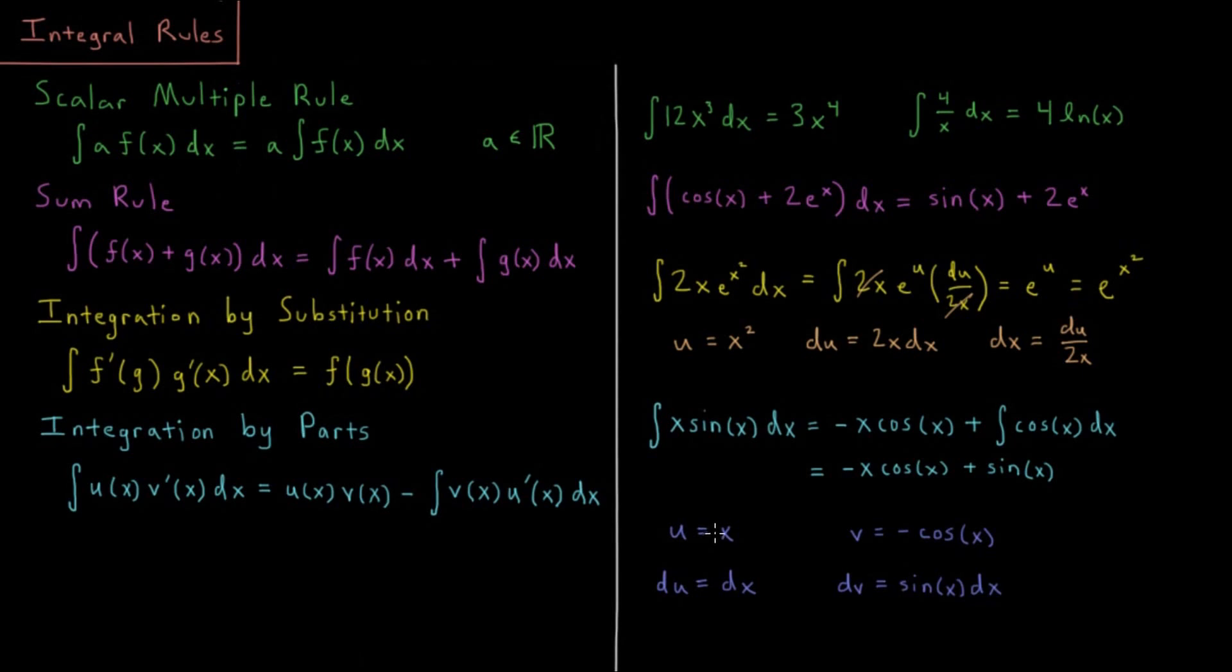We have u times v is negative x cosine x. Then we have minus the integral of v du, so that's negative cosine times dx. The negatives cancel to give us a positive, so we have the integral of cosine x dx. Our second integral is just cosine, which we know has integral sine. So the integral of x sine x equals negative x cosine x plus sine of x.